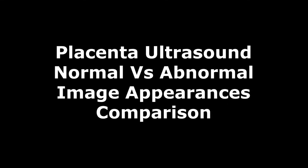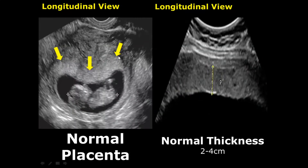Hello everyone, this is Dr. Sam and today we will discuss the ultrasound appearances of the placenta. The placenta is an organ that supplies blood to the fetus; it starts forming around 11 weeks of gestational age and is well visualized by the end of the first trimester, that is 13 weeks, appearing as an echogenic structure. The normal thickness is between two to four centimeters.